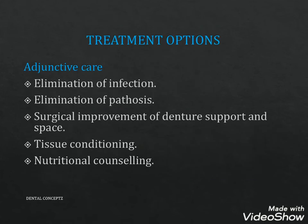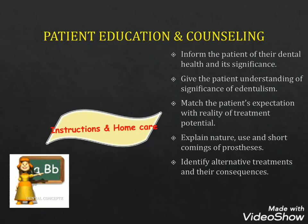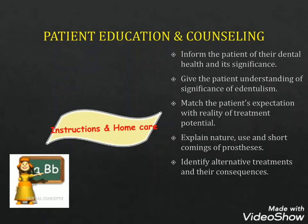Various treatment options include adjunctive care: elimination of infection, elimination of pathosis, surgical improvement of the denture-bearing area, tissue conditioning and nutritional counseling. Patient education and counseling is required — informing the patient of their dental health and its significance, giving the patient understanding of the significance of edentulism, matching expectations with reality of treatment potential, explaining the nature, use and shortcomings of the prosthesis, and identifying alternative treatments and their consequences.